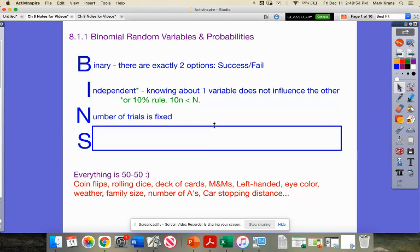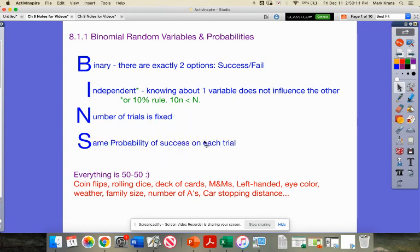Then the number of trials is fixed. And this is really the key to a Bernoulli trial. It'll be like out of 10 foul shots, out of a dozen eggs, out of this many trials. A fixed number of trials and then the same probability of success in each trial.